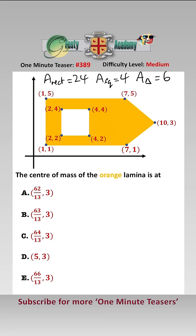Therefore, the area of the orange lamina is equal to 24 plus 6, take away 4, which is equal to 26.